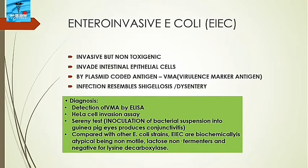Enteroinvasive E. coli (EIEC) is invasive but not toxigenic. It invades intestinal epithelial cells via plasmid-coded antigen, the virulence marker antigen (VMA). The infection resembles shigellosis or dysentery. Diagnosis of EIEC includes detection of VMA by ELISA, HeLa cell invasion assay, and the Sereny test, in which inoculation of bacterial suspension into a guinea pig produces conjunctivitis. EIEC strains are biochemically atypical — non-motile, lactose non-fermenting, and negative for lysine decarboxylase.